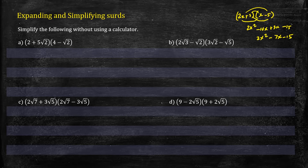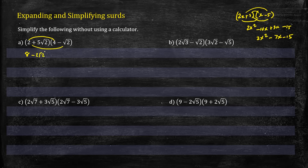In question a we have (2 + 5√2)(4 - √2). Expanding: 2 times 4 = 8, 2 times negative √2 = negative 2√2, 5√2 times 4 = 20√2, and 5√2 times negative √2 — note that √2 times √2 = 2 — so that gives minus 5 times 2.